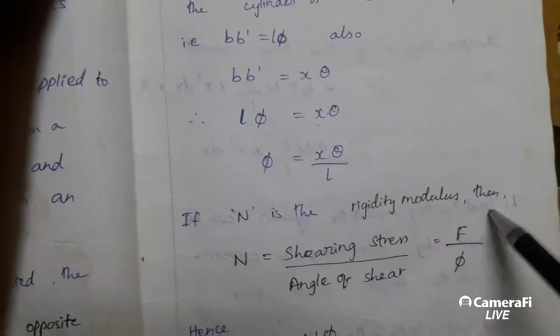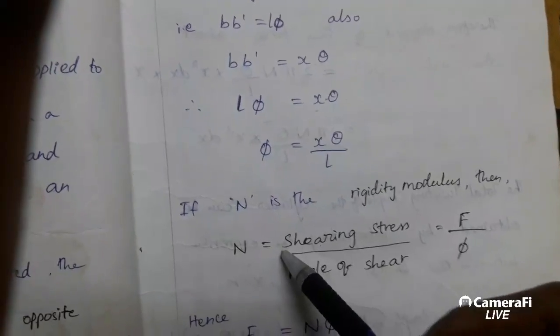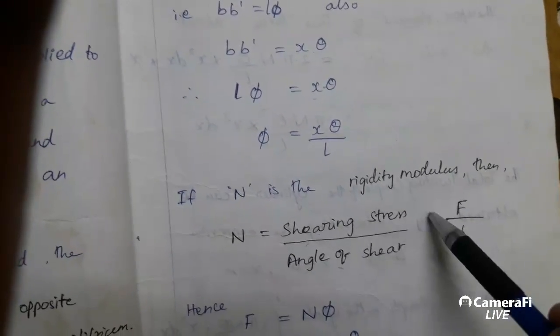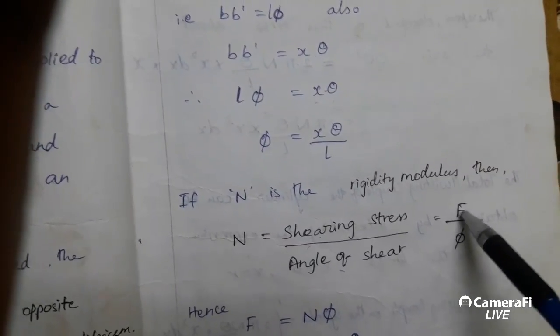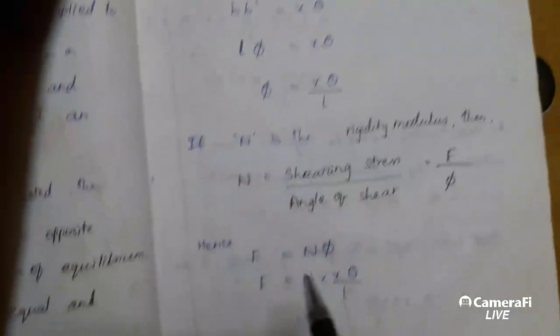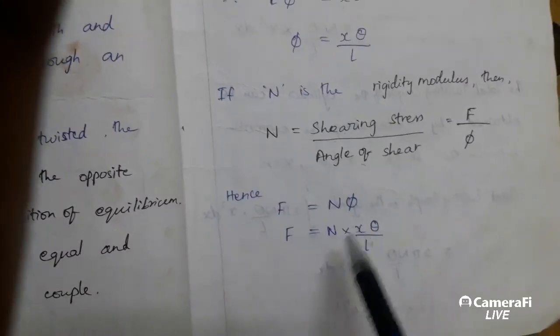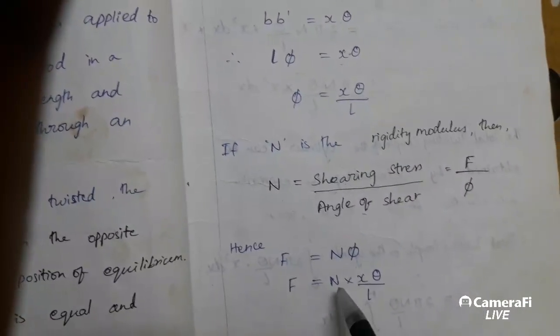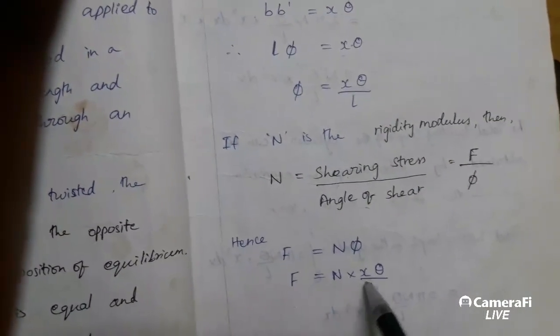If N is the rigidity modulus, then N equals shearing stress divided by angle of shear, as F by phi. Hence F equals N phi. F equals N into phi, which is X theta by L. Then F equals N into X theta by L.